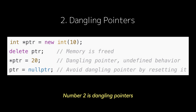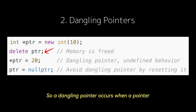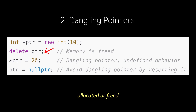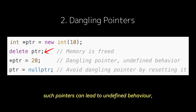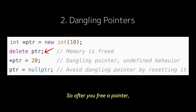Number two is dangling pointers. You don't want to dereference a pointer after you free its memory. A dangling pointer occurs when a pointer still points to a memory location that has been deallocated or freed. Dereferencing such a pointer can lead to undefined behavior, crashes, or data corruption. So after you free a pointer, set it to null or nullptr.